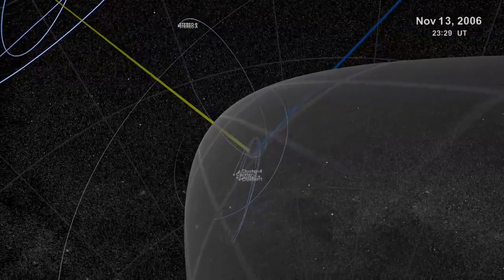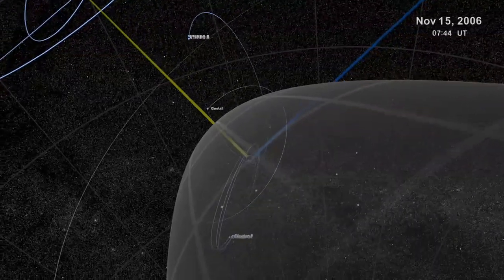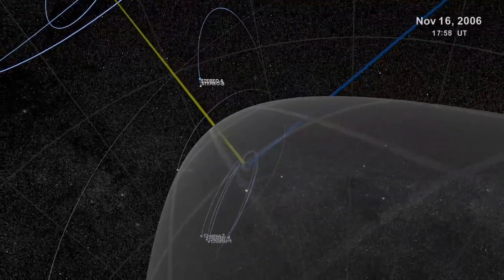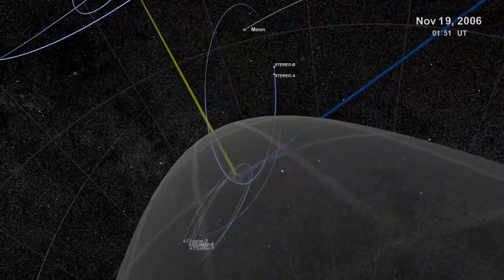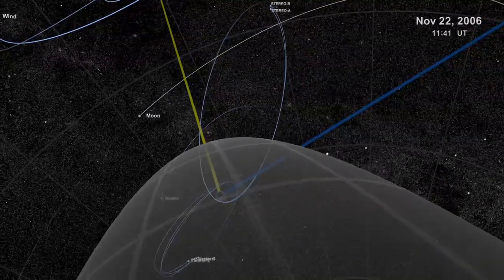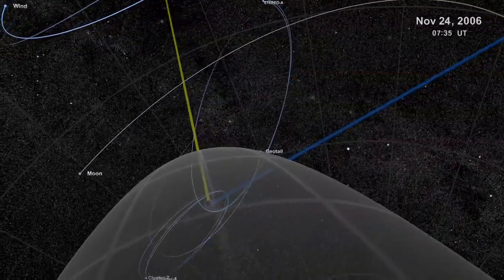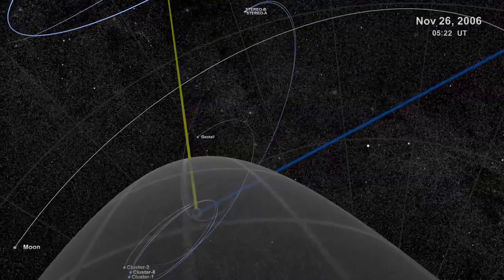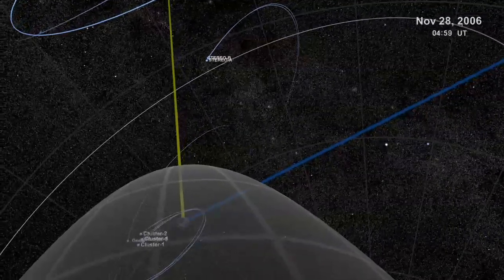The cluster vehicles are on a high elliptical flight path. Geotail makes a lazy loop all alone. The two stereo satellites fly in relatively close formation, but they won't stay that way for long.